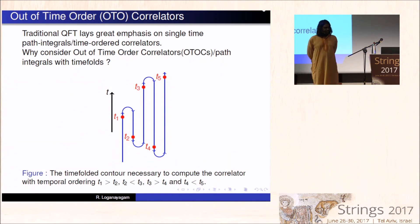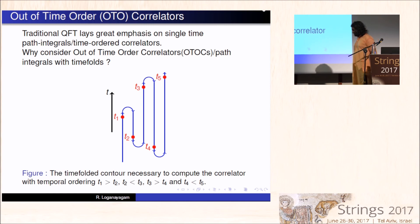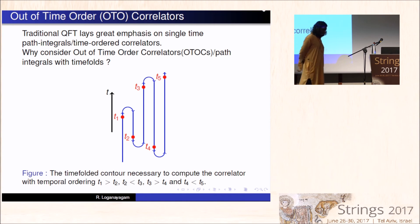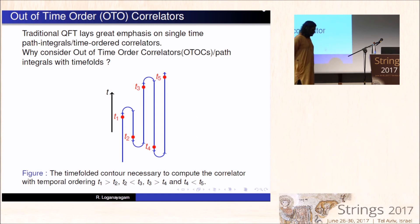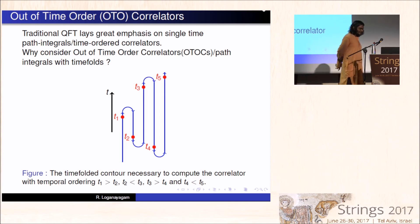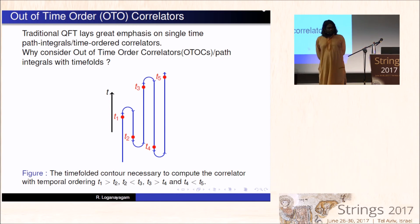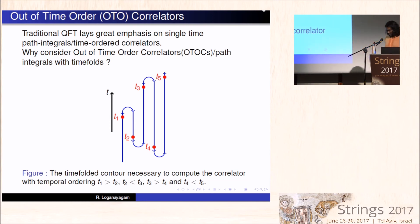The traditional quantum field theory places a lot of emphasis on single-time path integrals and time-ordered correlators. If pressed for justification by students in a quantum field theory course, what we usually say is: if you couple the system to some probe and do time-dependent perturbation theory, the response of a system to a source is given by time-ordered correlators in the Feynman path integral. Hence they are very natural to study, and these are the correlators that one is interested in.